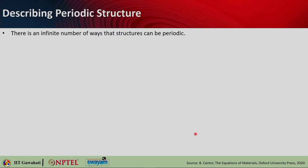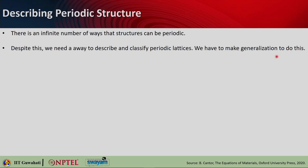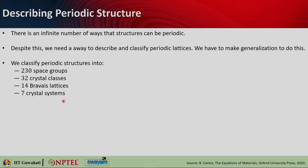How do you describe periodic structures? There are an infinite number of ways that structures can be periodic. Despite this, we need to find a way to describe and classify periodic lattices, so we have to make generalizations. We can classify periodic structures into 230 space groups, which can be classified into 32 crystal groups, or into 14 Bravais lattices — which you may have heard of from material science courses — and they also fall under seven crystal systems.